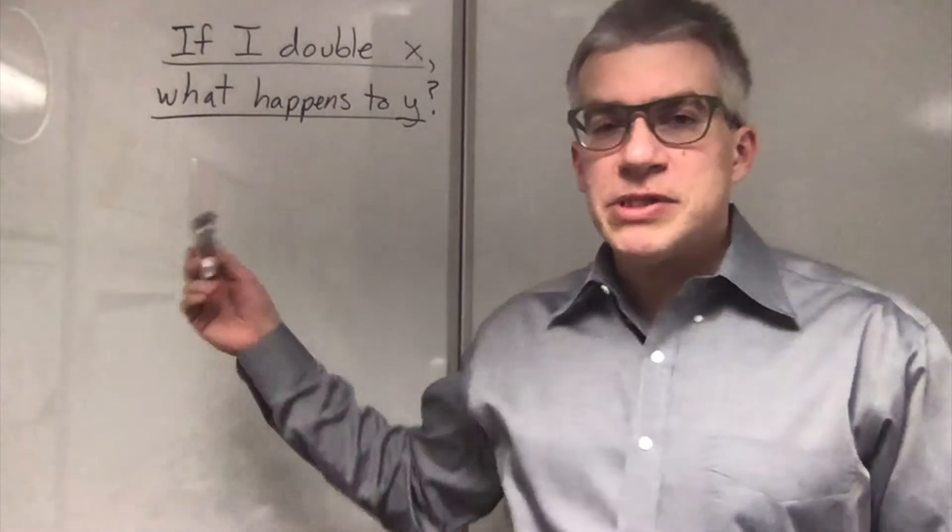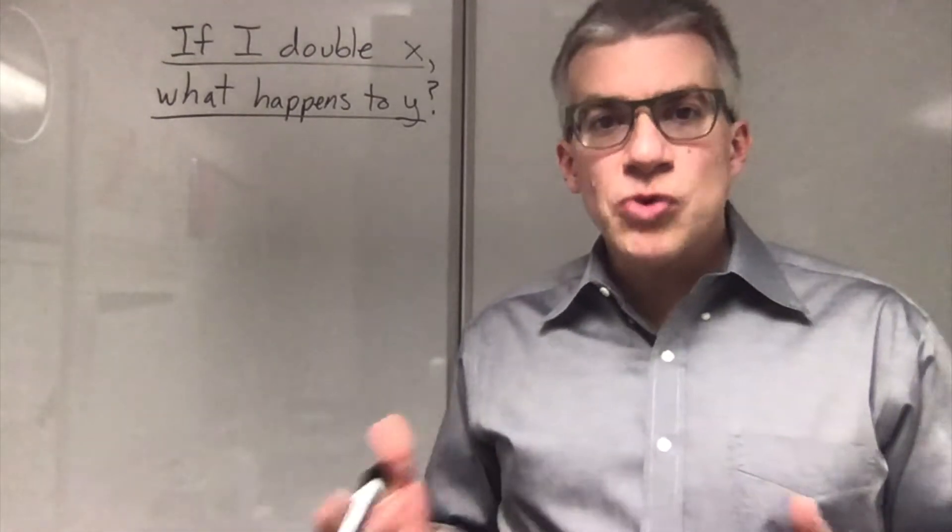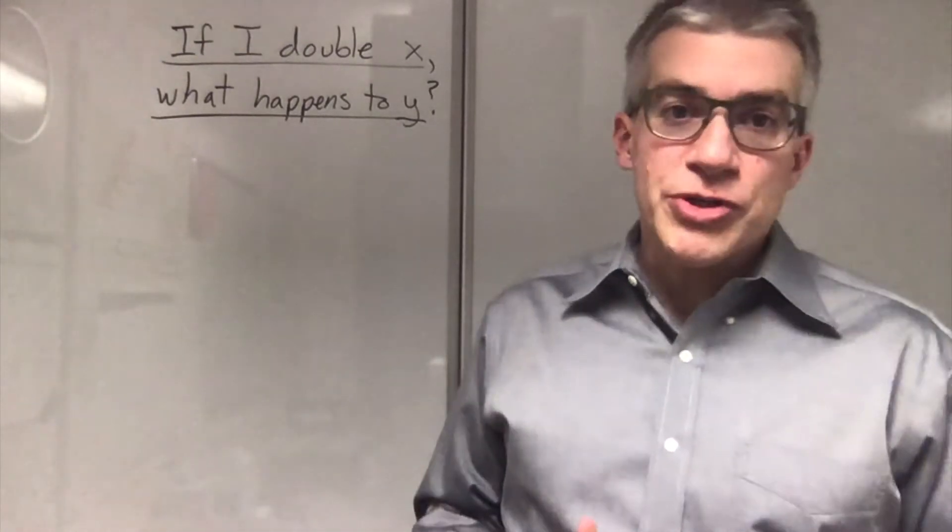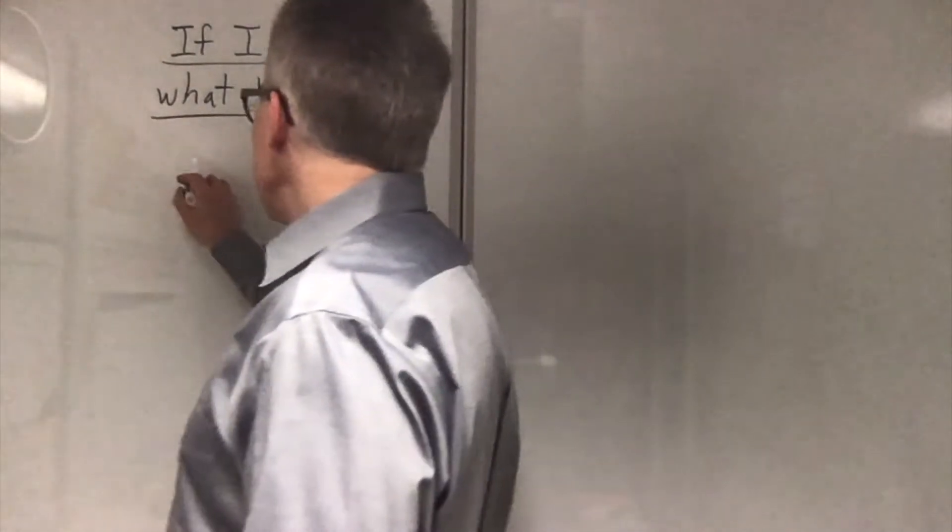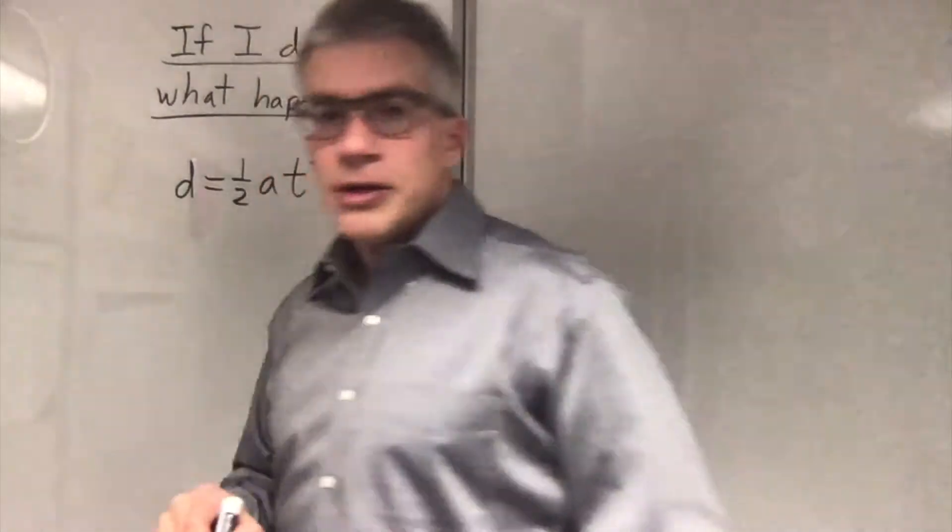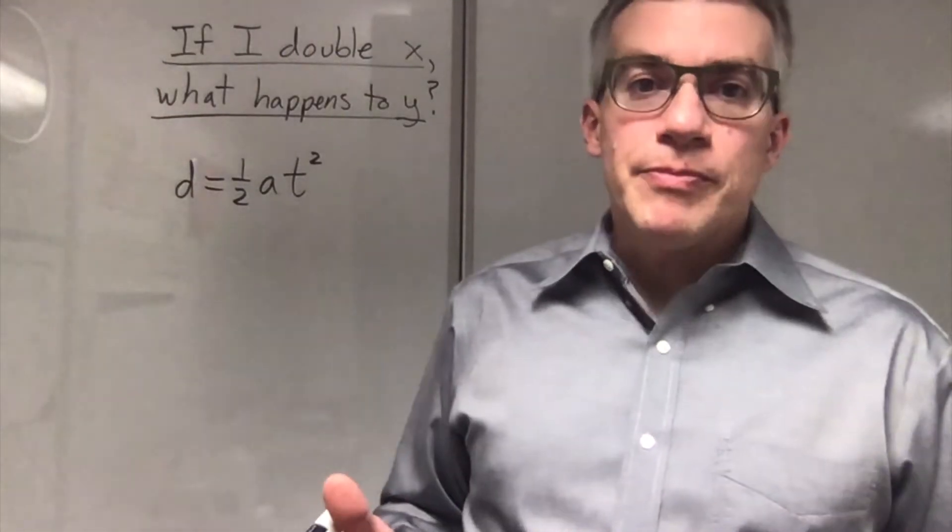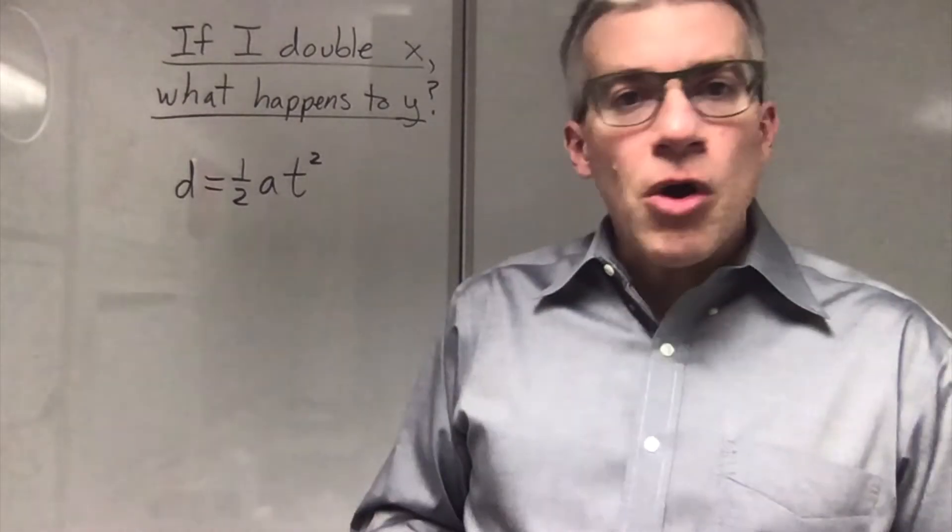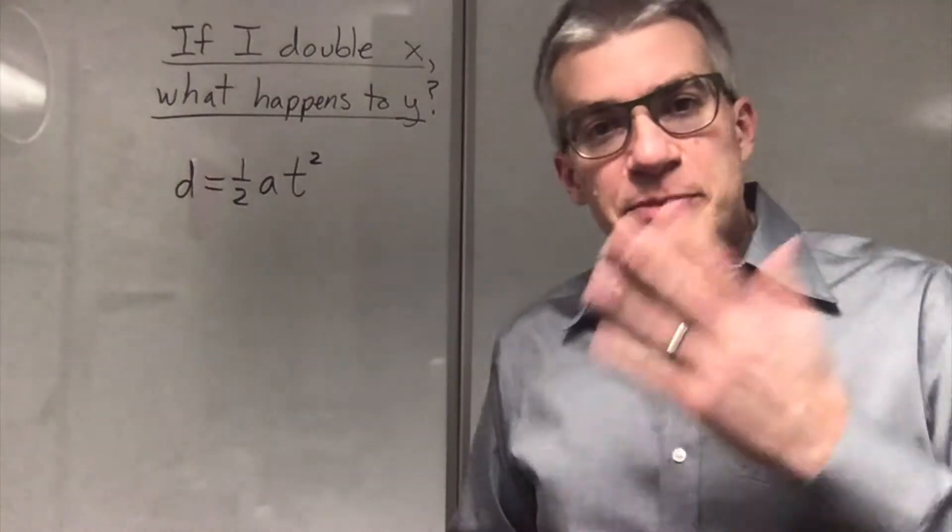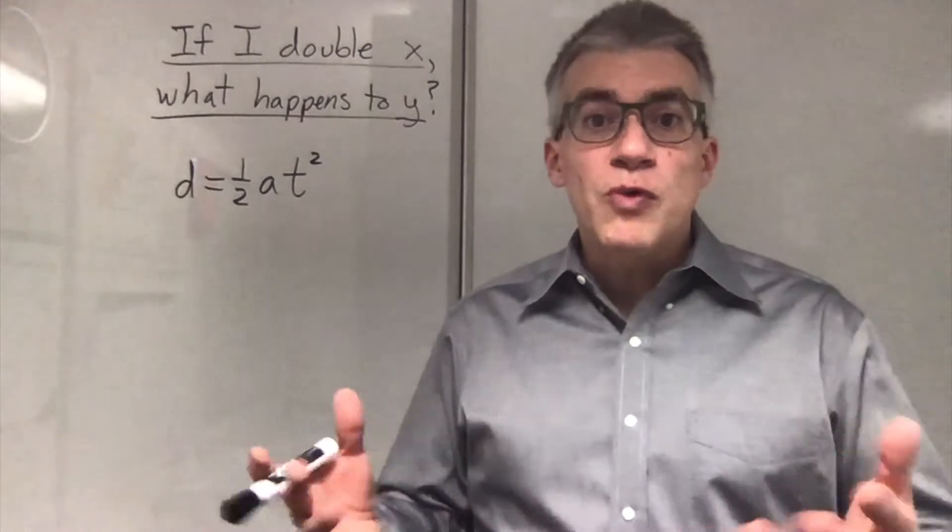If I double x, what happens to y? This is the gist of a common sort of physics problem, examining if you understand a formula for proportions. For example, if I had distance equals one-half acceleration times time squared. In these proportionality problems, there's only one term, meaning there's no plus or minus signs. It's all about multiplication and division, so that if you double one thing, you might double another, or you might cut it in half, or you might multiply it by the square root of 2, or 4, or 8.